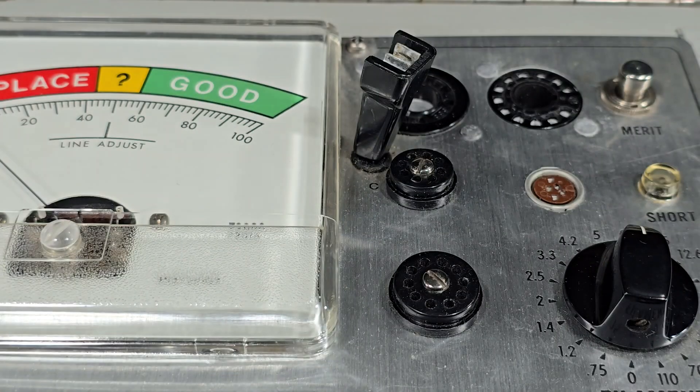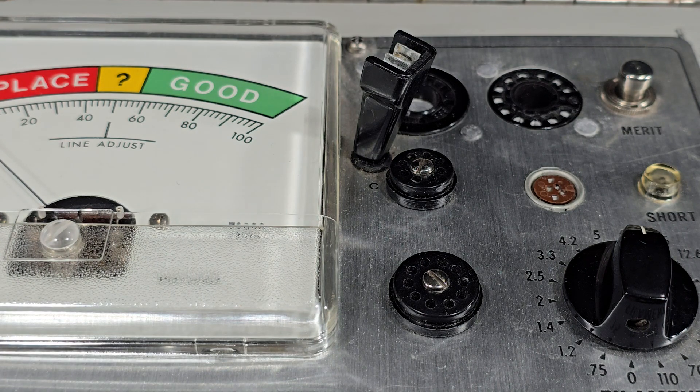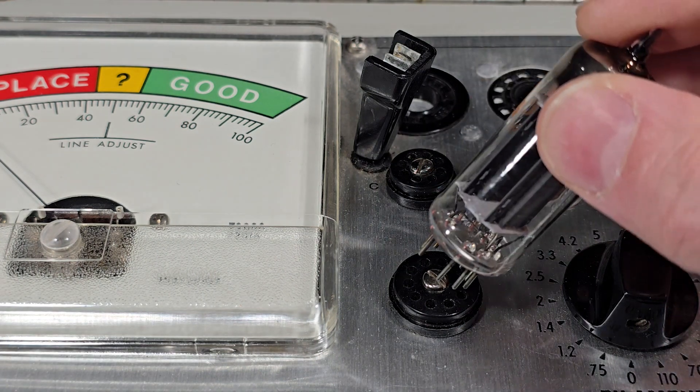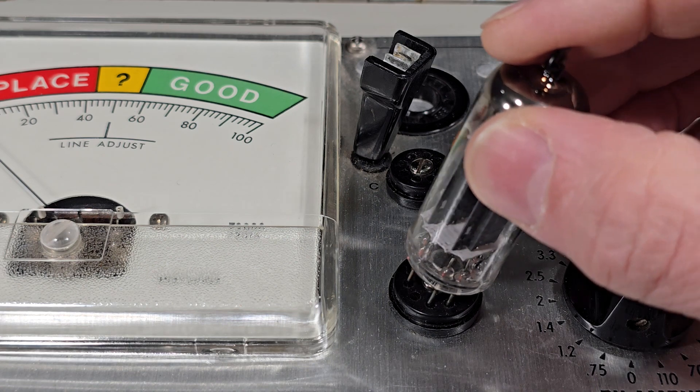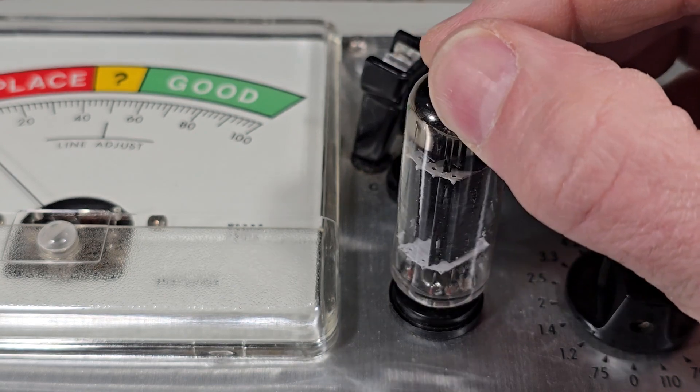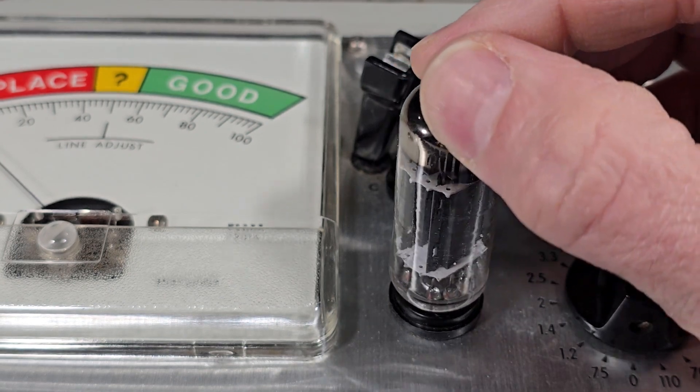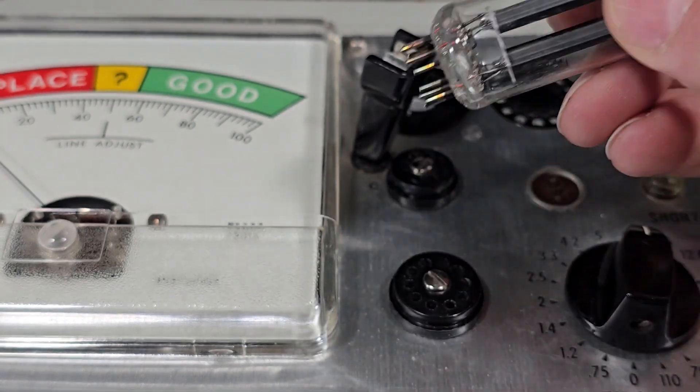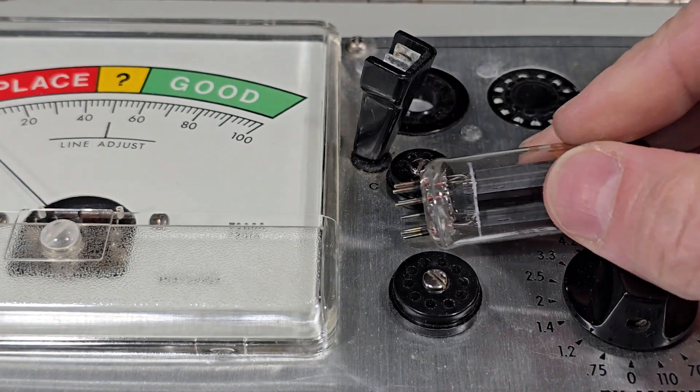Here's how it works. Suppose you have a tube where the pins are not straight. You set it into the socket like so and then you rotate it around as you're pushing. That will straighten all the pins.